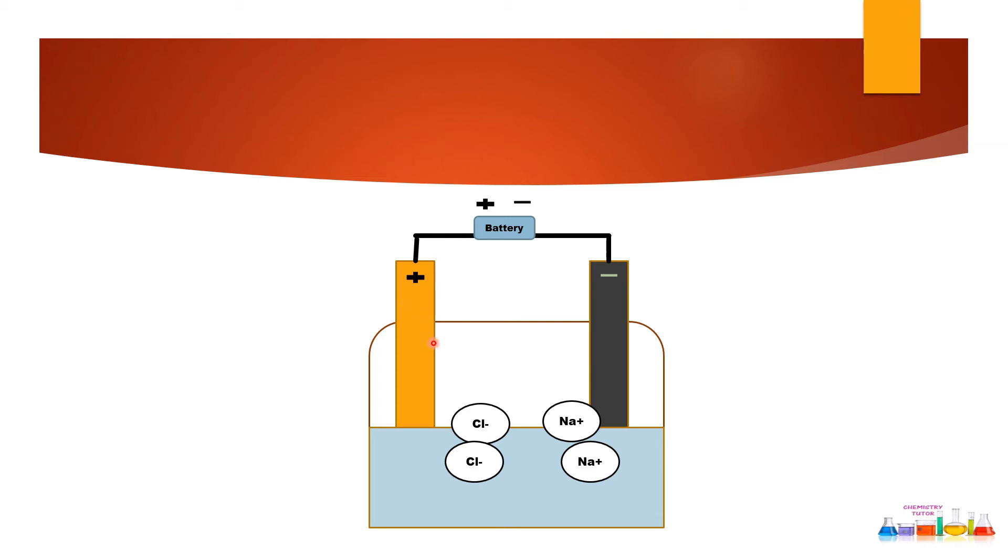Now as chlorine will reach to anode, it will lose its one electron and that one electron will be taken by cathode, and that cathode already sodium charge is there.